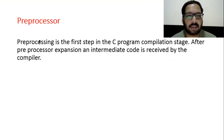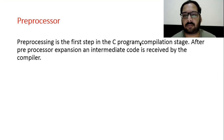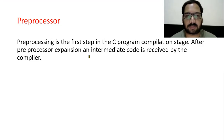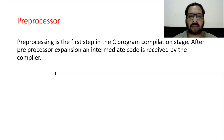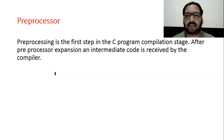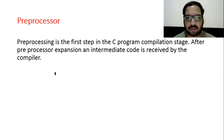Pre-processor: pre-processing is the first step in the C program compilation stage. After pre-processor expansion, intermediate code is received by the compiler. You have used #include and #define. Whenever you compile a program, they perform their task first — they replace themselves wherever their requirement is.